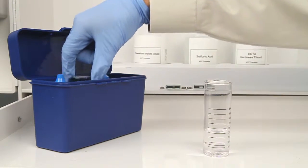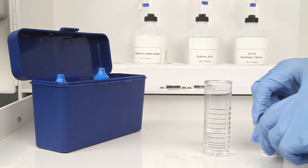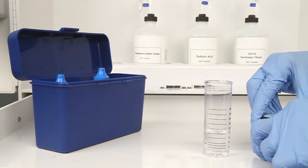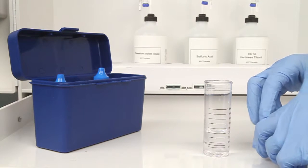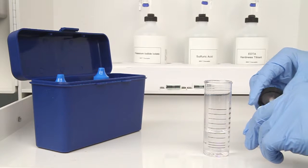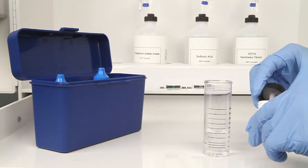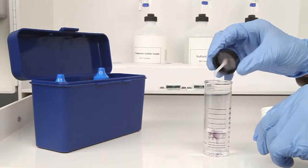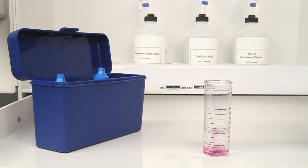The next step is to add one scoop of hardness indicator powder. After the addition of the powder, swirl the vial to ensure the powder is completely dissolved. In this case, the sample turns red, indicating that hardness is present.